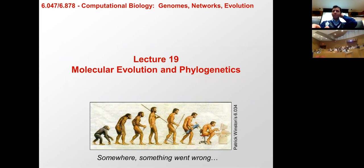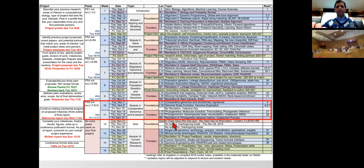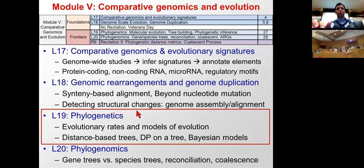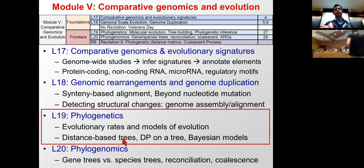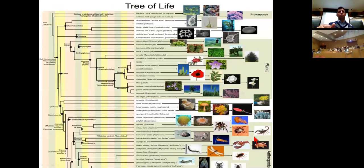Today we're covering molecular evolution and phylogenetics. This is the third lecture in the comparative genomics and evolution module. We're going to learn about evolutionary rates, models of evolution, how to build trees based on distances, how to carry out dynamic programming on a tree, and Bayesian models for understanding evolution.